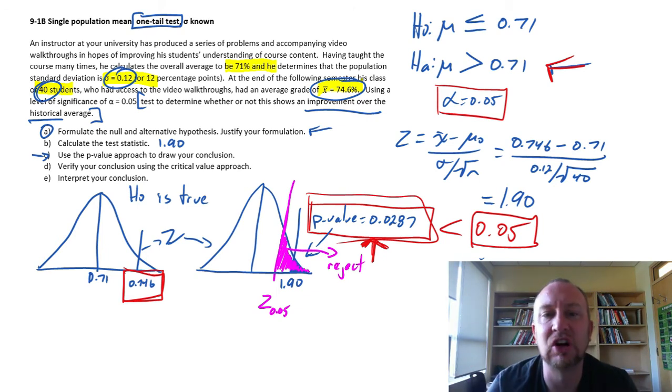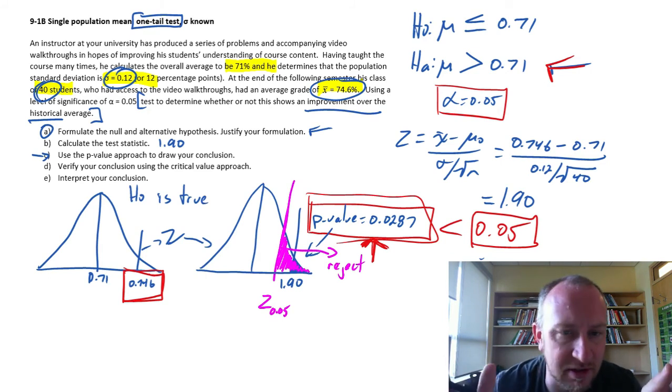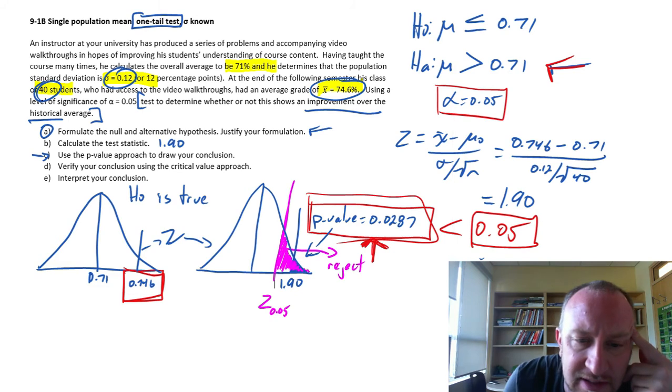That z-value that will give me 0.05 in that upper tail. And then we can apply the rejection rule, that if my test statistic is larger than that critical value, then we can reject. And we'll always get exactly the same results, or conclusion, using the p-value approach, or the critical value approach.